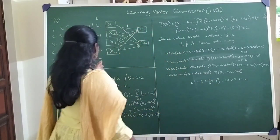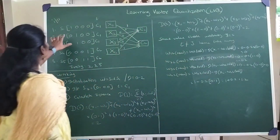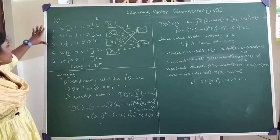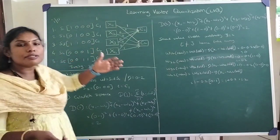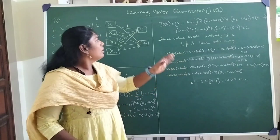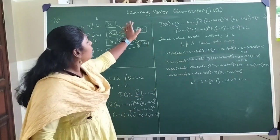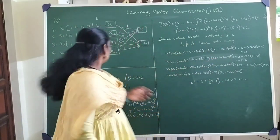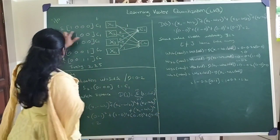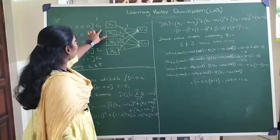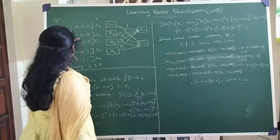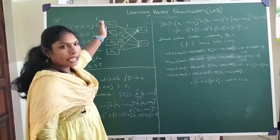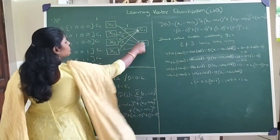In this example I have taken 5 input training pairs. My set consists of 5 input training pairs, and Learning Vector Quantization is a supervised training. So when it is supervised, for each and every training pair we know the target. My input consists of 4 patterns, 4 input neurons, and 2 clusters.